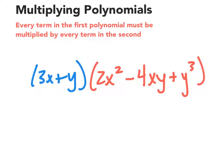Whenever we're multiplying polynomials, every term in the first must be multiplied by every term in the second. So every single term in this first polynomial, the 3x and the y, are going to be multiplied by each of these terms.